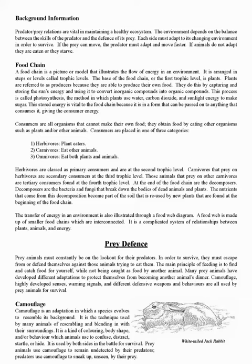A food chain is a picture or model that illustrates the flow of energy in an environment. It is arranged in steps or levels called trophic levels. The base of the food chain, or the first trophic level, is plants. Plants are referred to as producers because they are able to produce their own food. They do this by capturing and storing the sun's energy and using it to convert inorganic compounds into organic compounds.